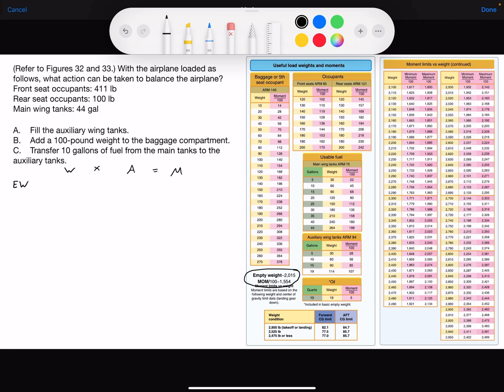So empty weight of the airplane is 2,015 pounds. And the moment is 1,554. The moments are all in hundreds, but I'm not going to do in hundreds. So I'm going to add a couple of zeros here and make it 155,400.